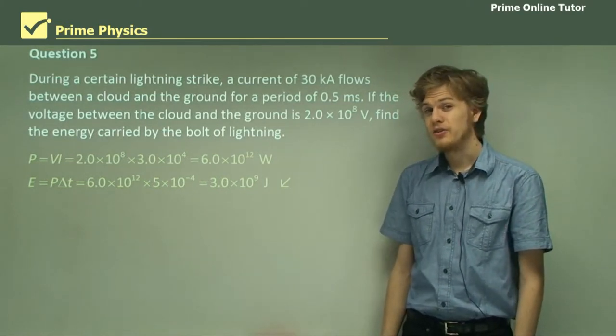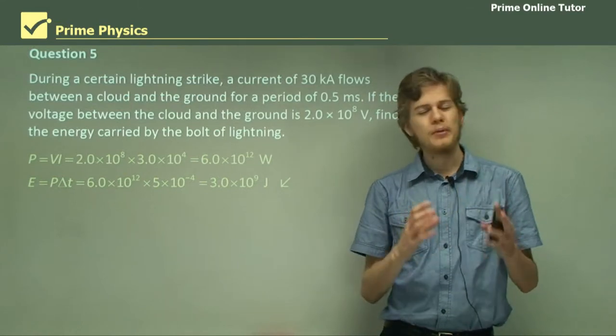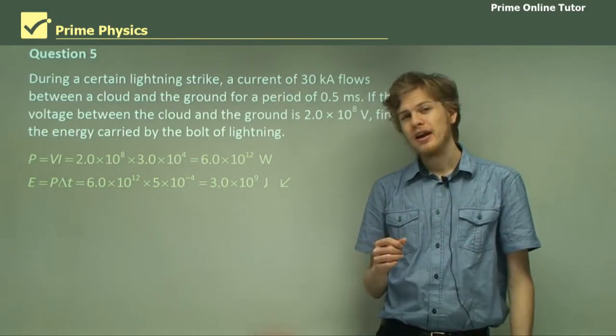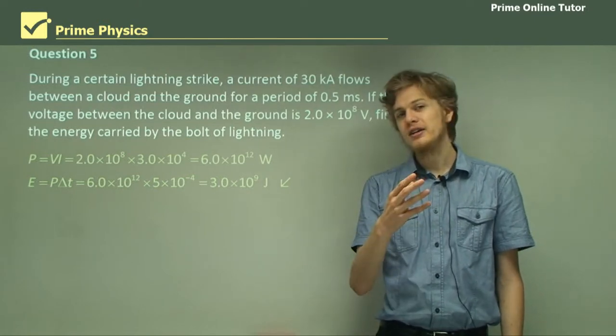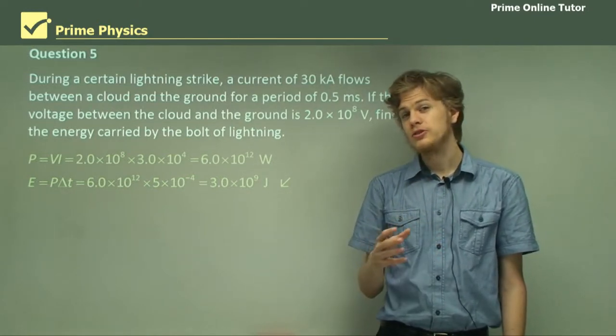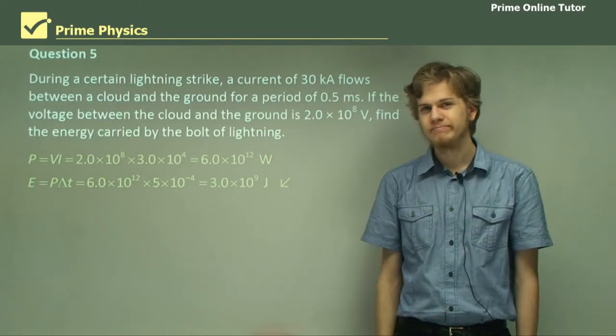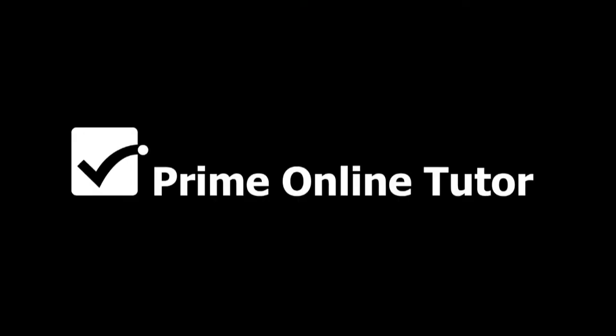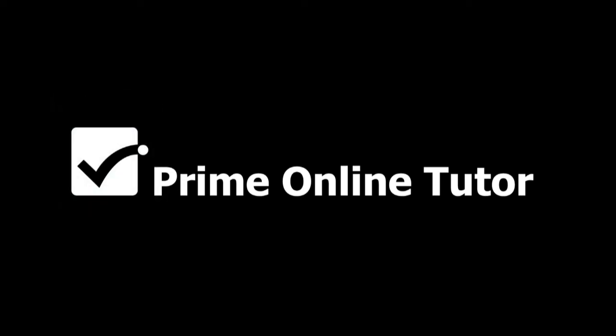So, that's the end of the questions. In this section, we've learned about the relationship between power and energy. And how to calculate the power through a resistor in three different ways. Energy per time. Voltage times current. Or, current squared times resistance.